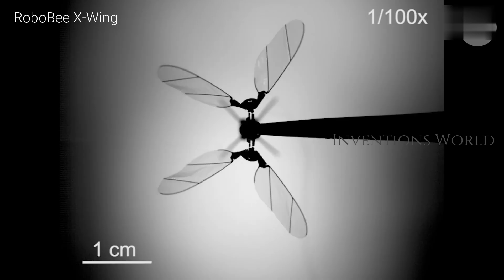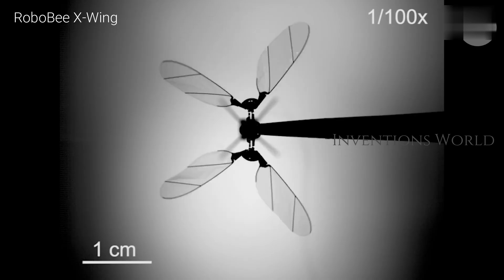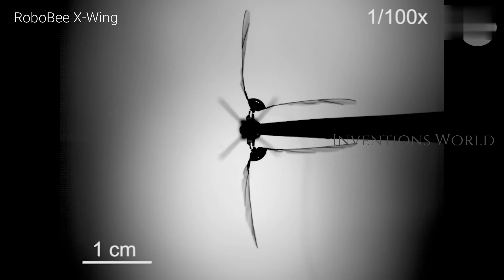The robot currently requires the equivalent of three times the intensity of natural sunlight, so isn't yet able to fly outside.